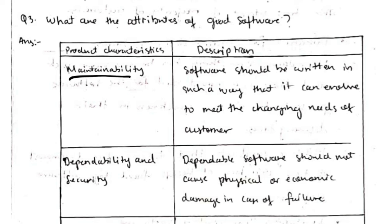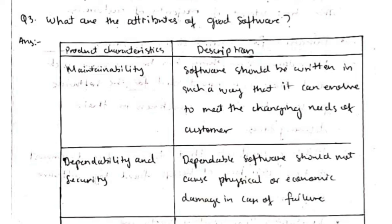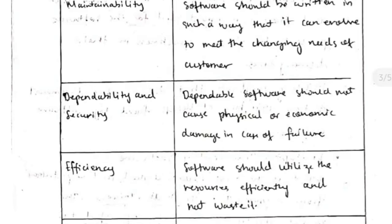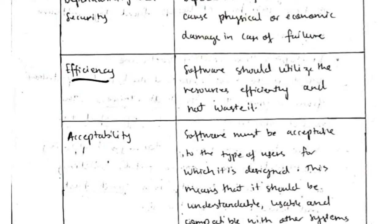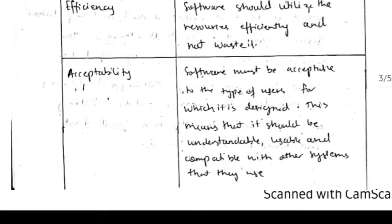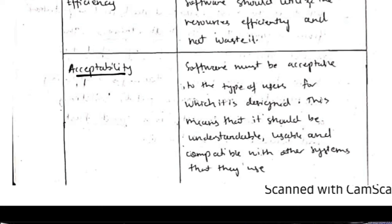The attributes of a good software product: first, maintainability — the product should be maintainable, not require excessive time and energy, and everything should be organized. Second, dependability and security — in these times a lot of data is being stolen and lost, so the best software is dependable and secure. Third, efficiency — use resources efficiently without wastage. Fourth, acceptability — the product should be accepted by the public and be of use to them.